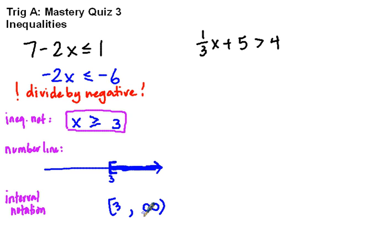Next one. Again, this is linear, so I can just subtract 5 from both sides, leaving this side with simply 1/3 x. 4 minus 5 is negative 1.